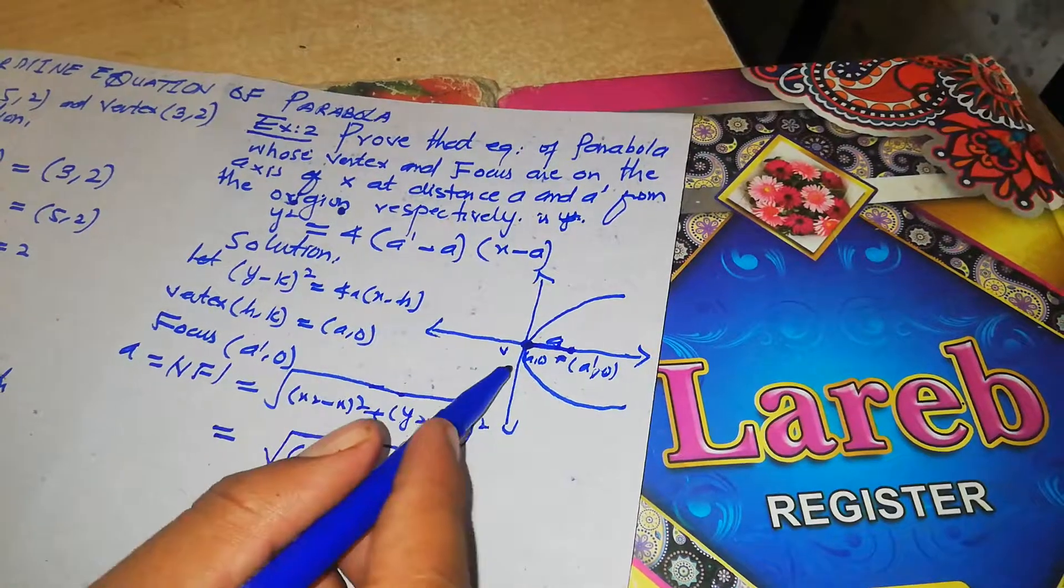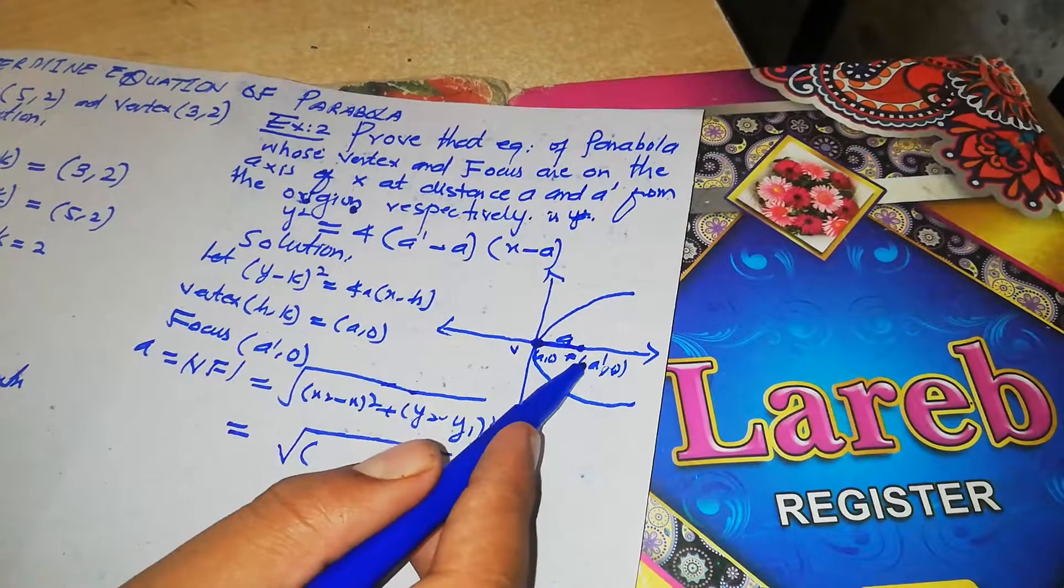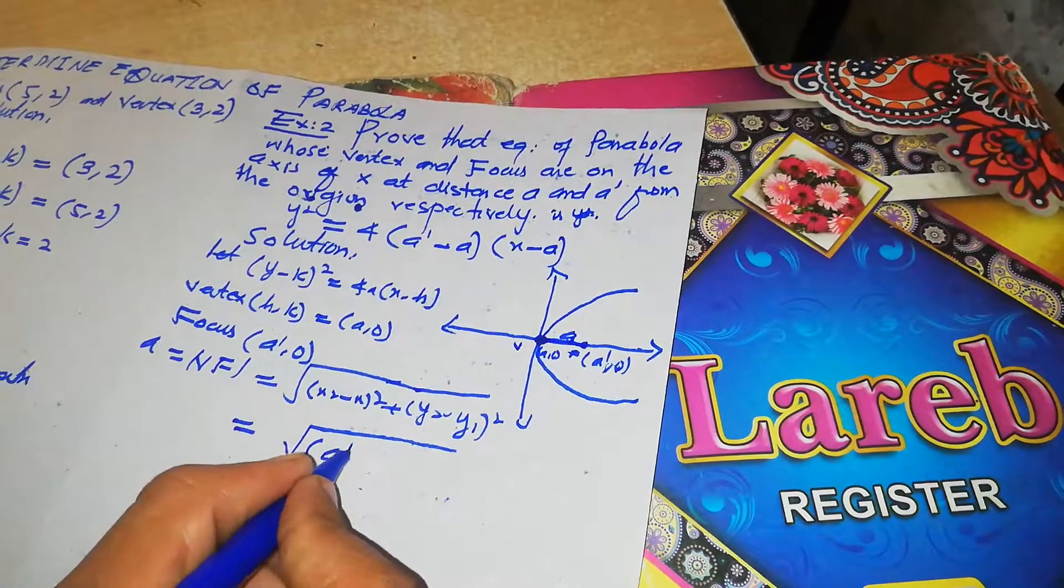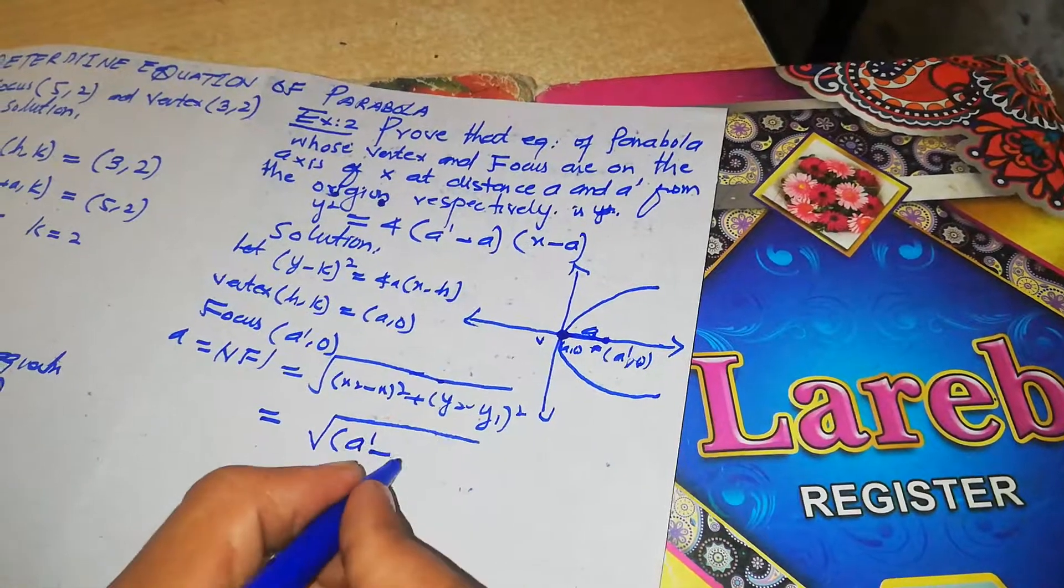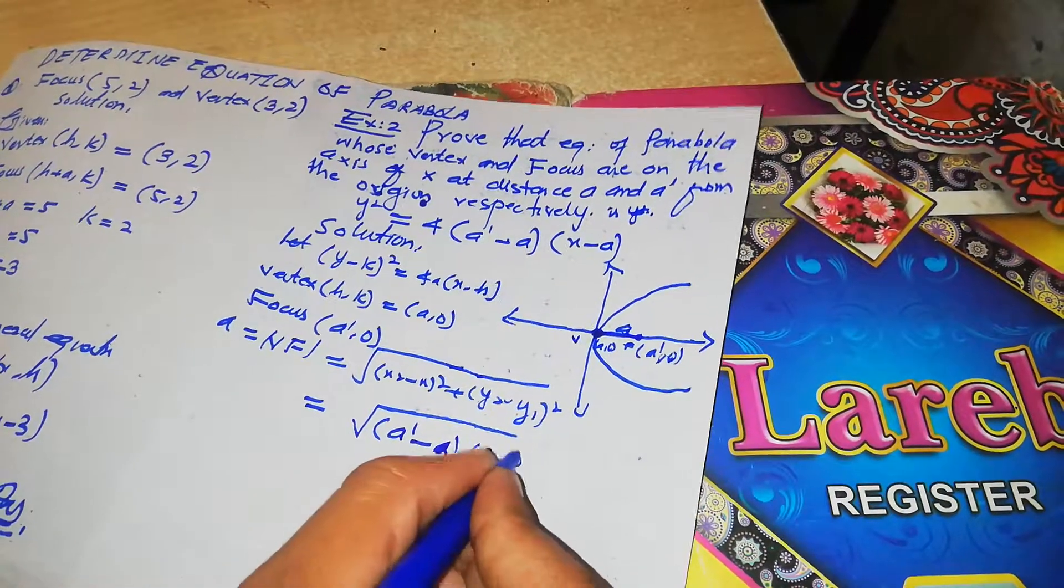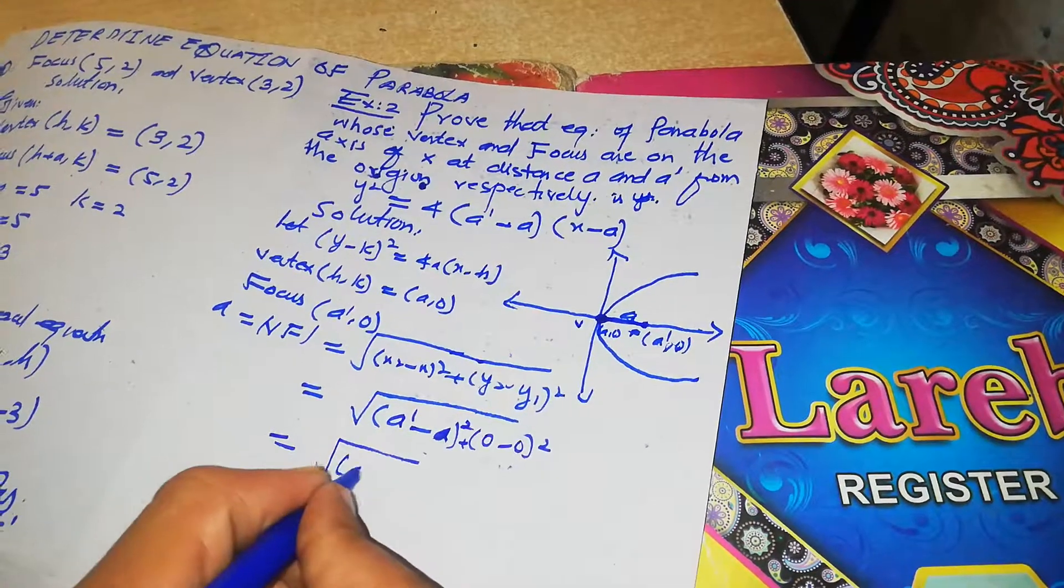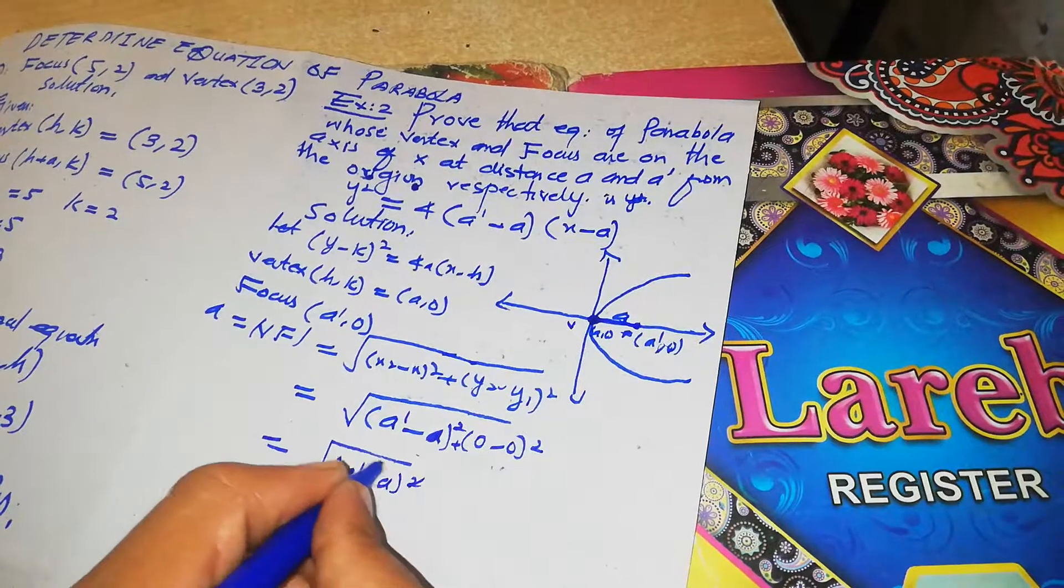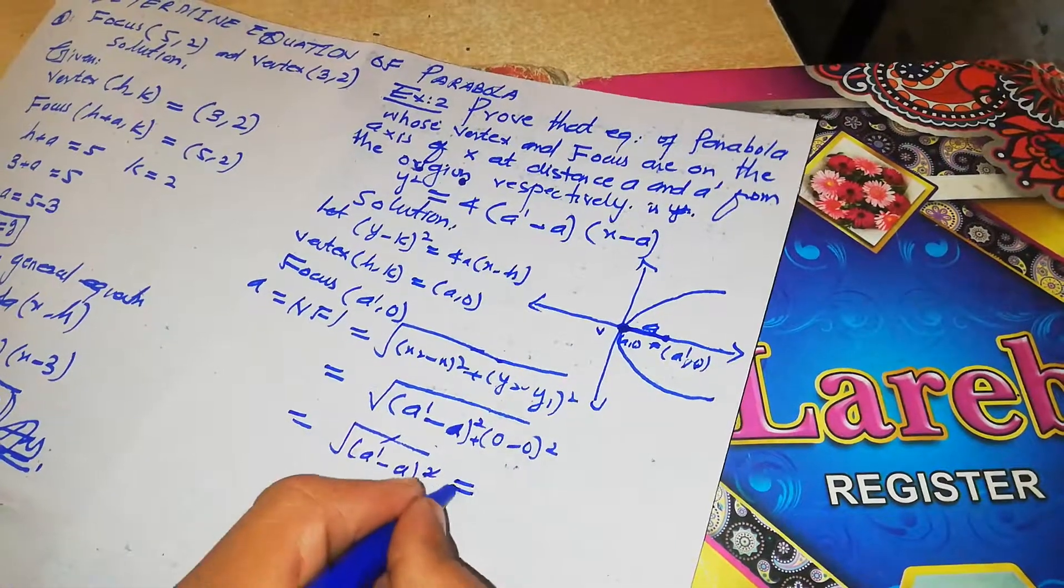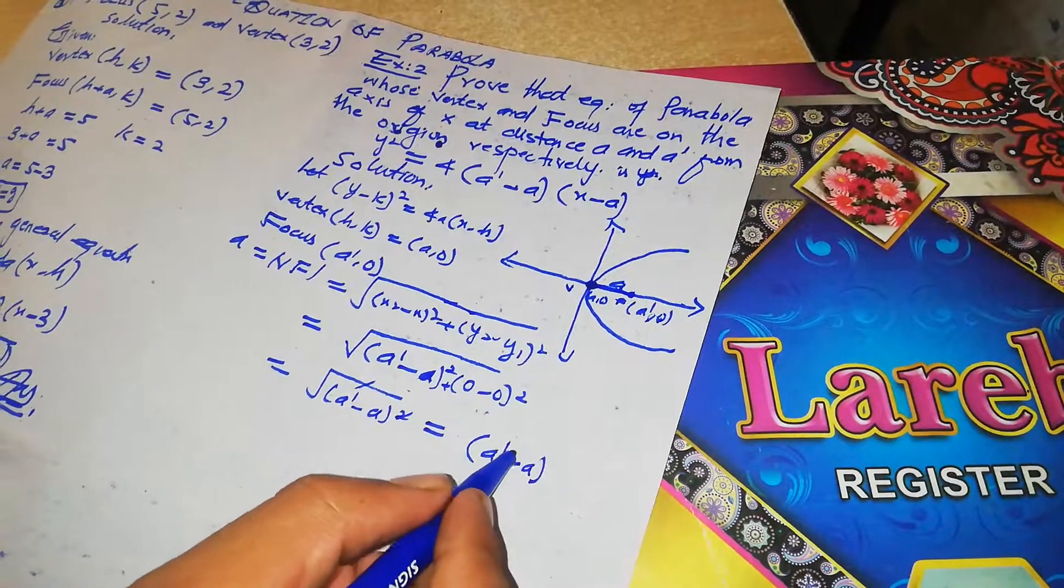Here x1, y1 and x2, y2, means x2 is a prime, x1 is a, y2 is 0 minus y1 is 0, whole square. The distance is (a prime minus a) whole square. Taking the square root means the value of a is (a prime minus a).